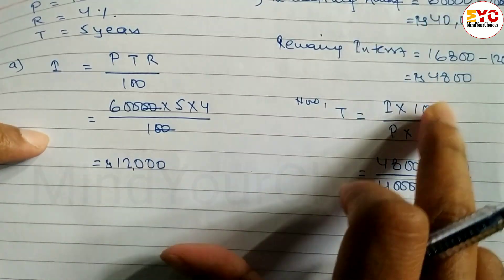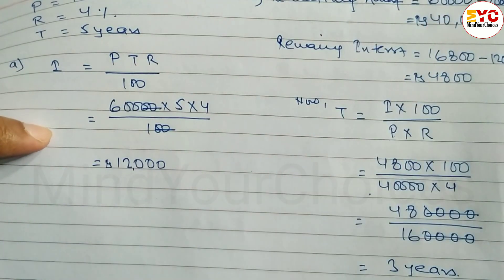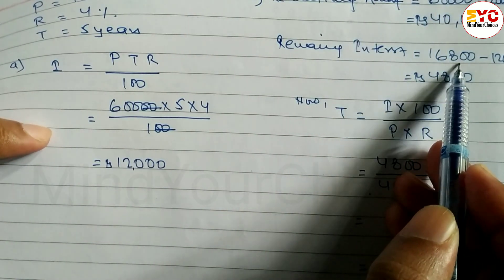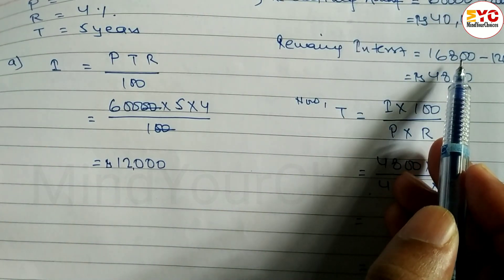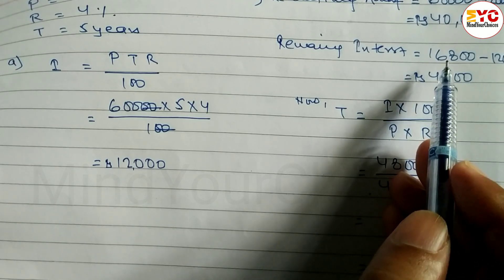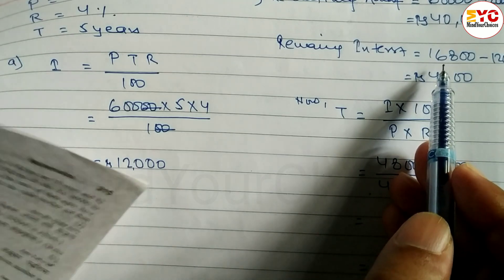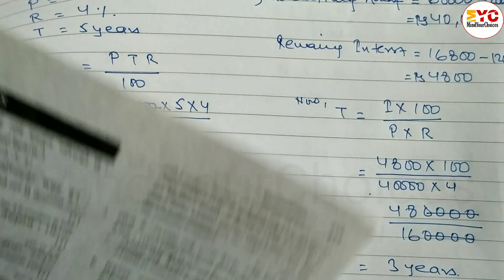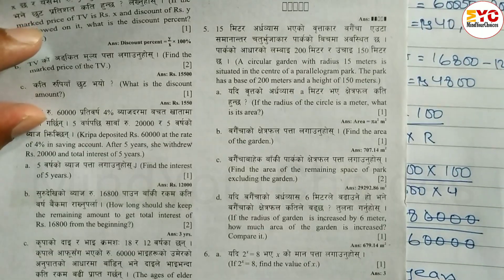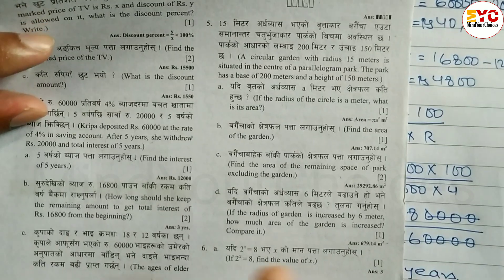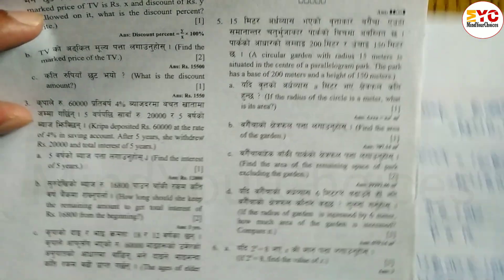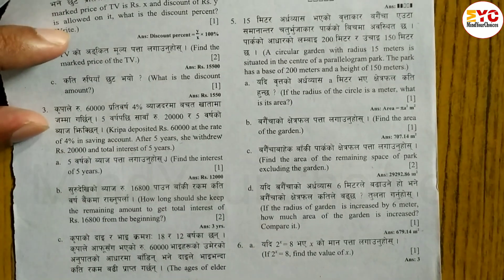She should keep the remaining amount of Rs. 40,000 for 3 more years so that the total interest from the beginning reaches Rs. 16,800. Now moving on to Part C.